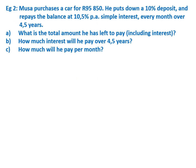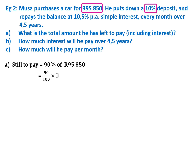Example two: Musa purchases a car for 95,850 rand. He puts down a 10% deposit and repays the balance at 10.5% per annum simple interest every month over four and a half years. First, he pays a 10% deposit upfront, so he still has to pay 90% of 95,850 rand. Calculating 90 over 100 times 95,850 gives 86,265 rand still to pay.